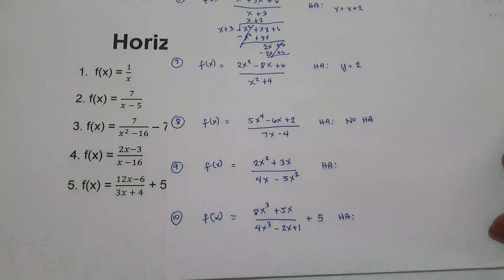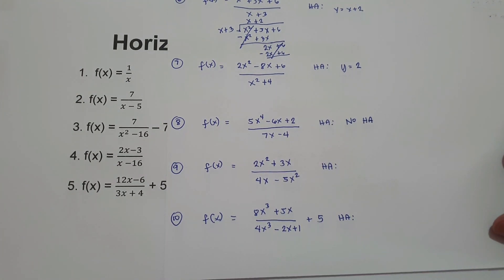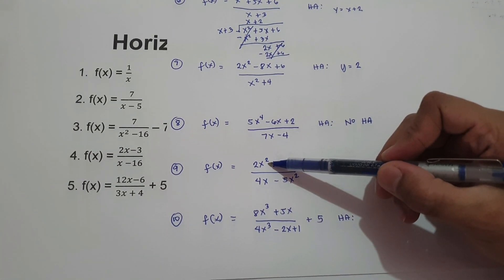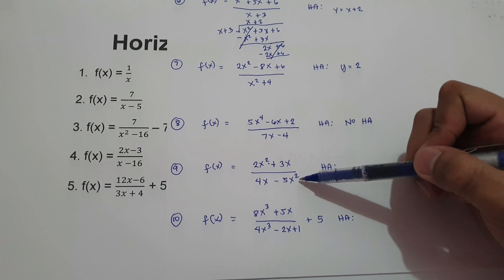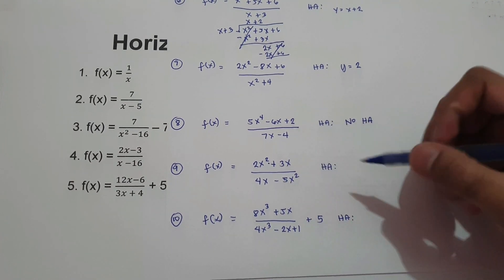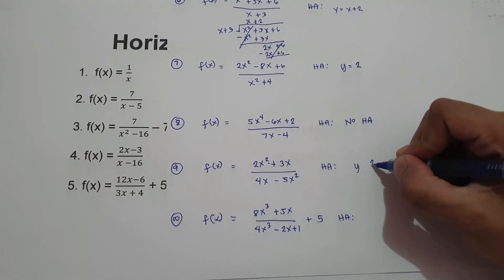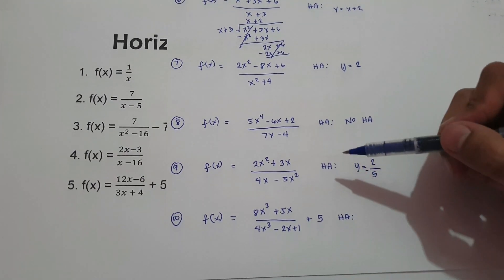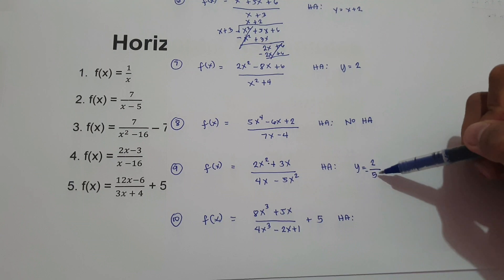Go ahead and try number 9. Number 9 falls on case number 2, because the highest exponent on the numerator is 2 and the highest exponent on the denominator is also 2. Therefore, our horizontal asymptote is the ratio of the leading coefficients — that is 2 over negative 5. So our horizontal asymptote is 2 over negative 5.